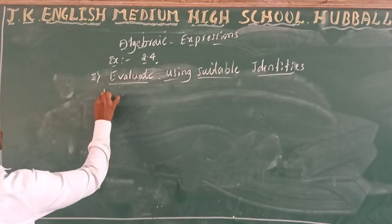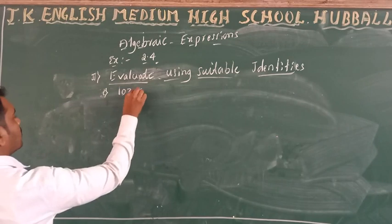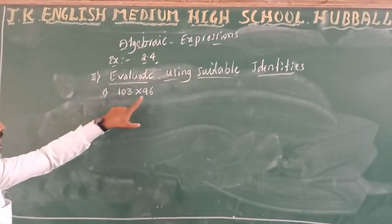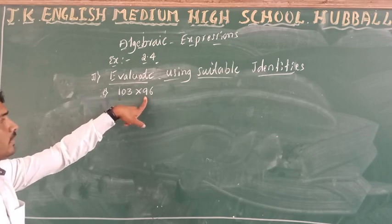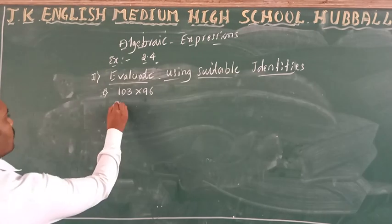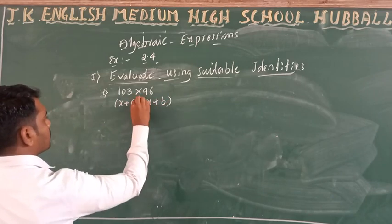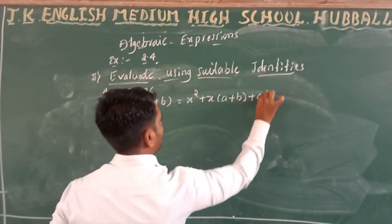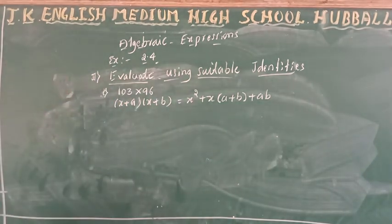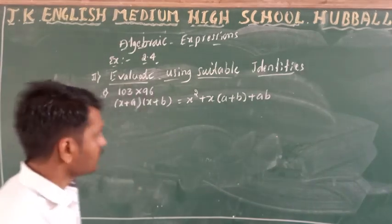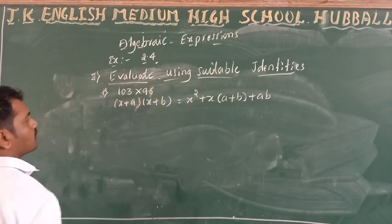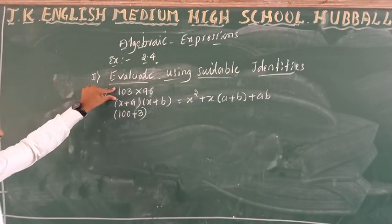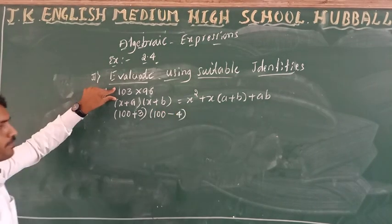The next question is 103 into 96. Using the same identity x plus a into x plus b: write 103 as (100 + 3) and 96 as (100 − 4). So x equals 100, a equals 3, and b equals minus 4. Be careful — the b value must be taken as minus 4 since 100 minus 4 equals 96.